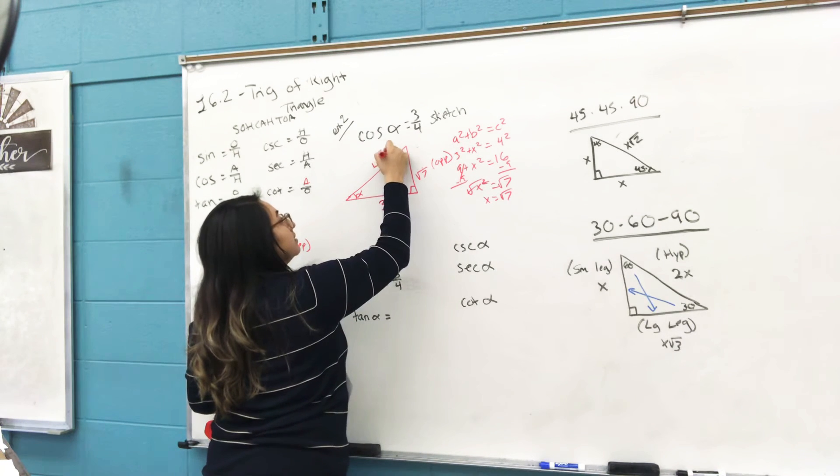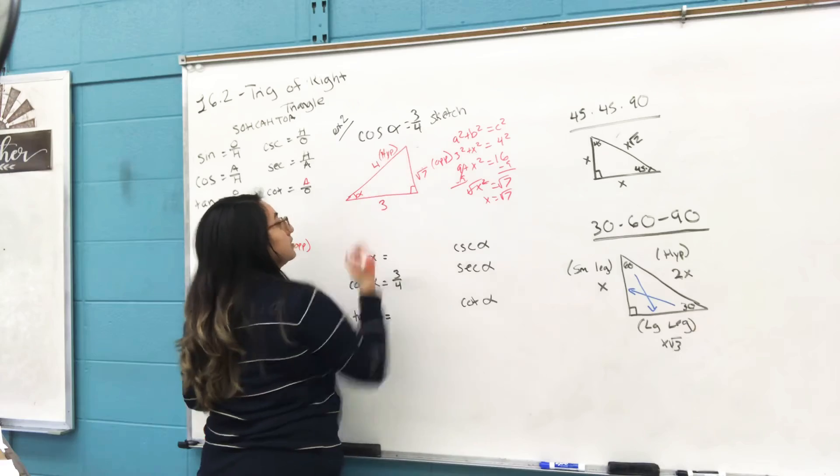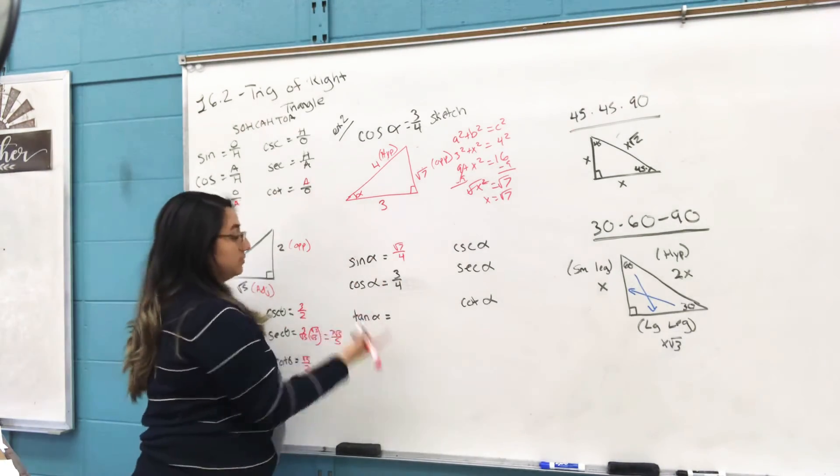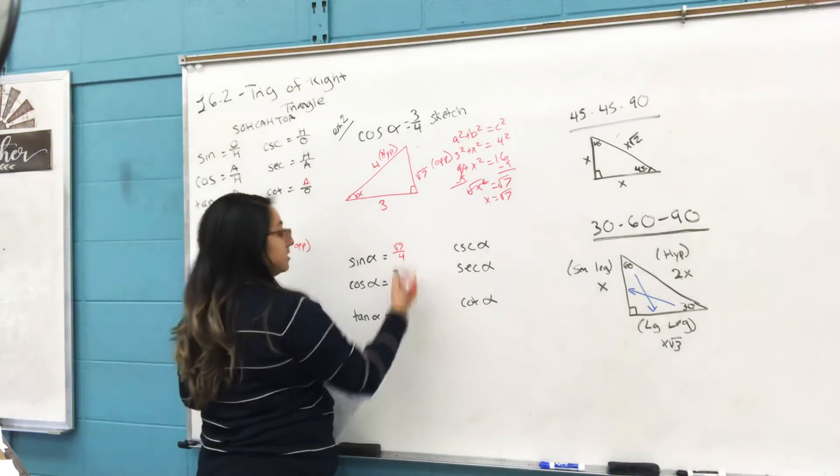So opposite is √7, hypotenuse is 4, and that's your answer. Cosine is what we have. Tangent: opposite over adjacent—√7 over 3.